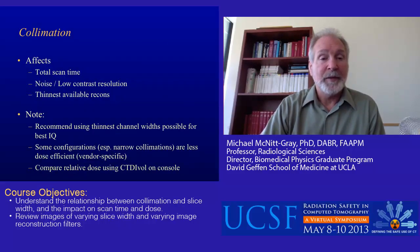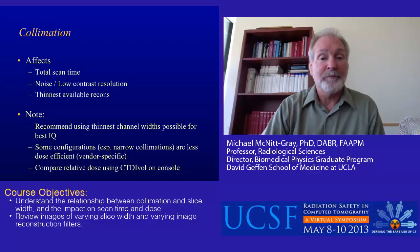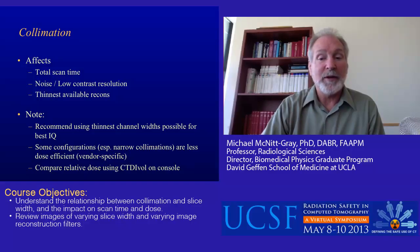Collimation affects several things, including the total scan time, noise, and ultimately low contrast resolution. It also often affects the thinnest available reconstructions used for reformats such as coronals and sagittals. We recommend using the thinnest channel widths possible for the best image quality. However, some configurations — especially narrow collimations — are less dose efficient, and this can be vendor specific. You can compare relative dose using CTDI vol on the console, as it will reflect these changes.